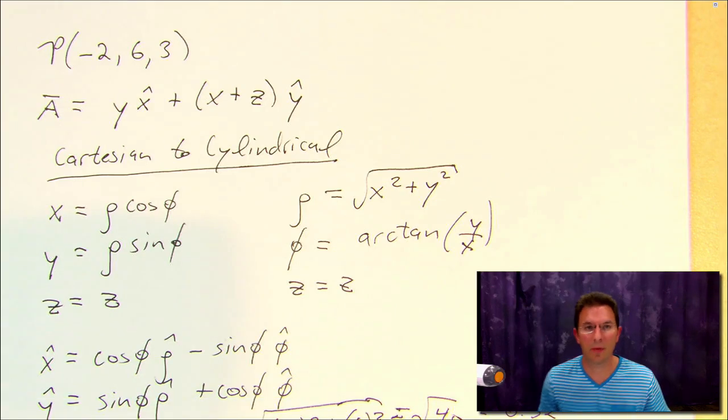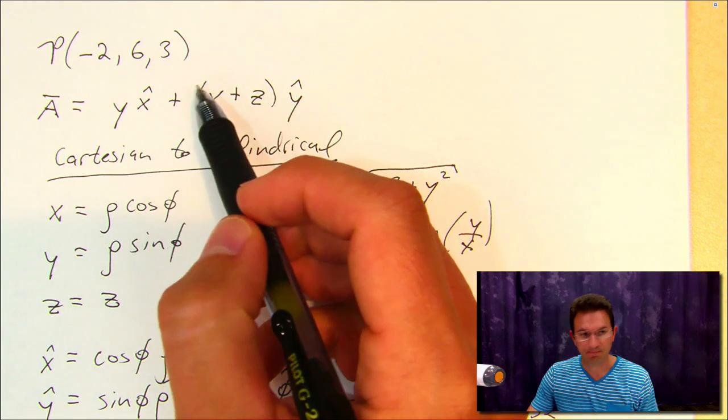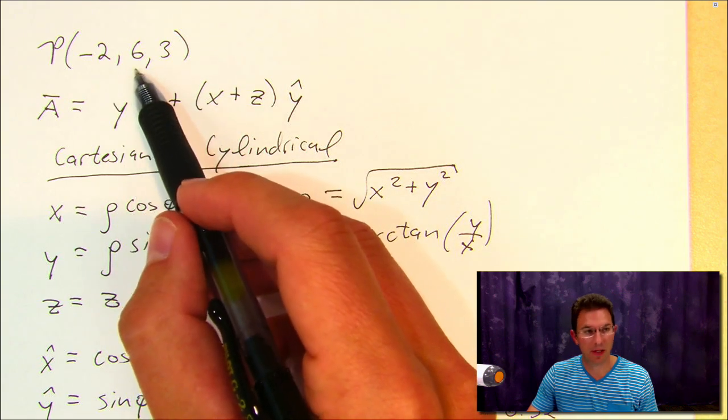Let's have a look at an example that will help us to understand coordinate transformations. Let's say that I have a point in Cartesian coordinates here: minus 2, 6, 3.